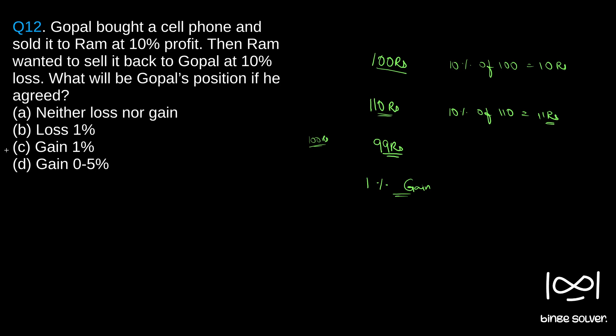So the solution is C, gain 1%. Another common mistake people could make is Gopal got an initial profit of 10 rupees from this transaction, right?